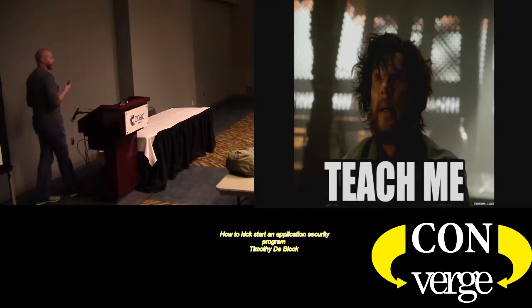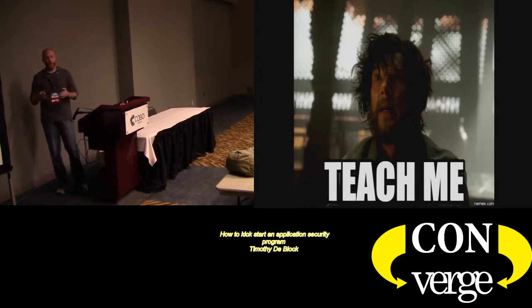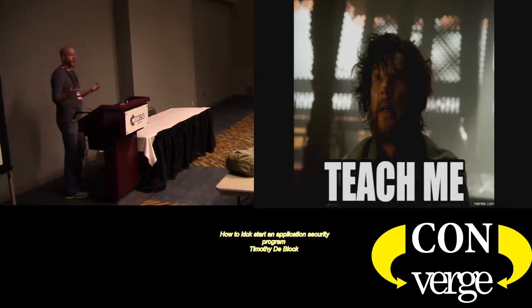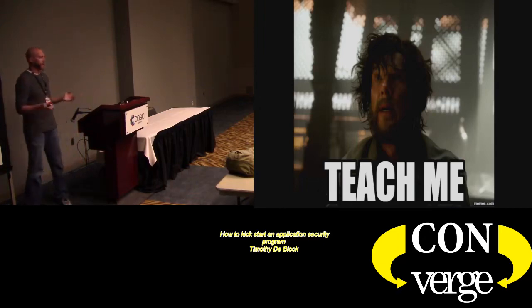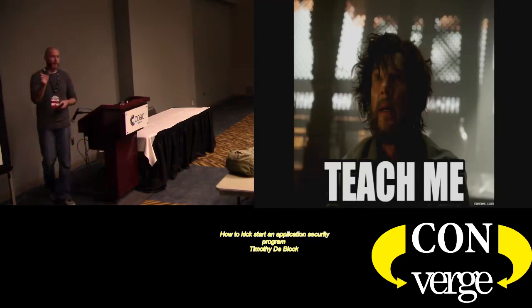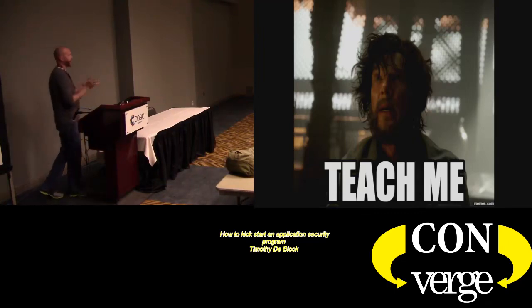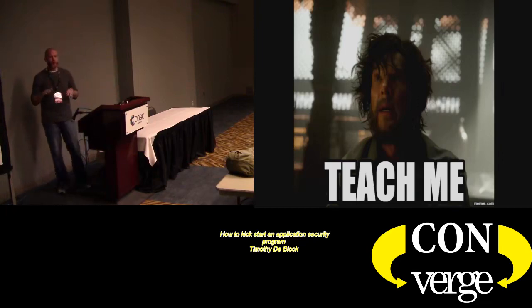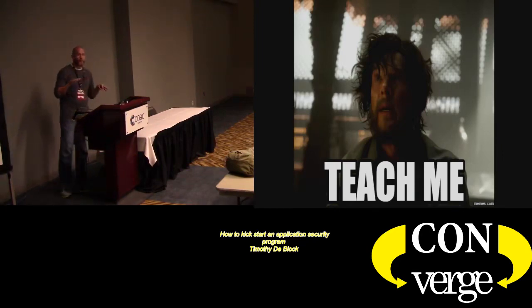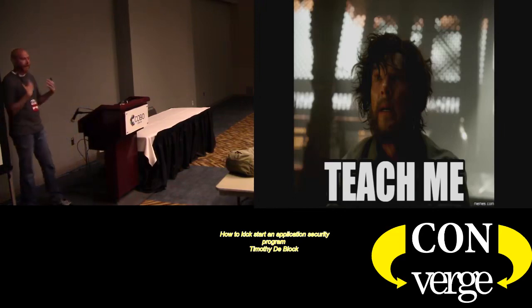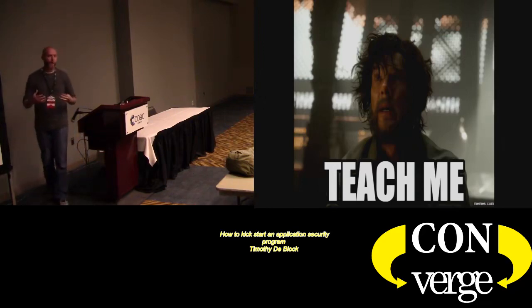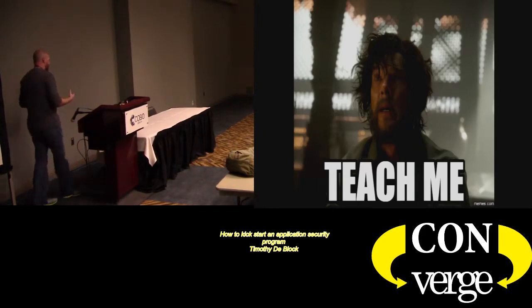I started doing one-on-one and group training with the development team. I showed them how to install ZAP — another benefit of ZAP being free is I can have it installed on all the dev machines. On the front of ZAP there's an attack URL field where you just dump a URL in and hit attack — but that's actually a very shallow scan. As I mentioned, you want to click through everything first. I hadn't told them that, so they went and fixed the vulnerabilities from that getting-started button, then I did a more thorough scan and found more. They asked, 'How'd you find that?' So I sat down with them again and showed them how I went through the application to find things.